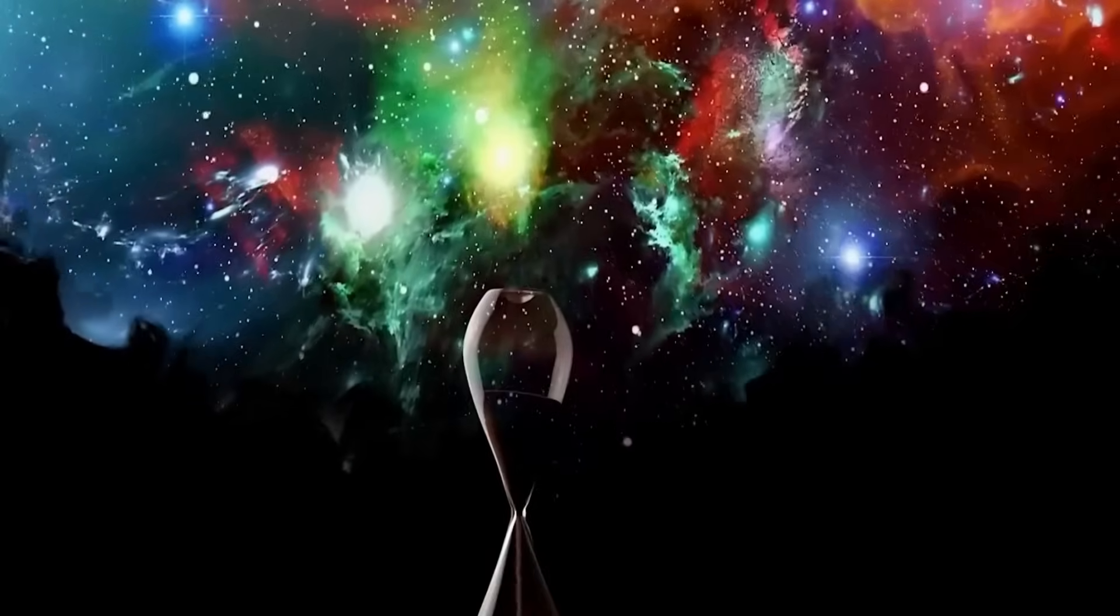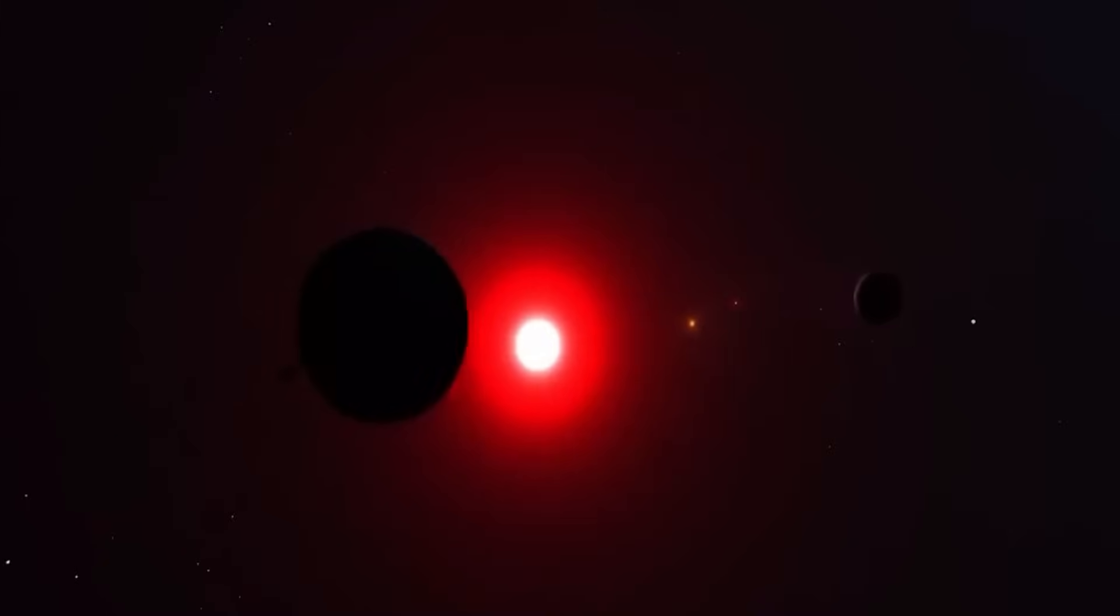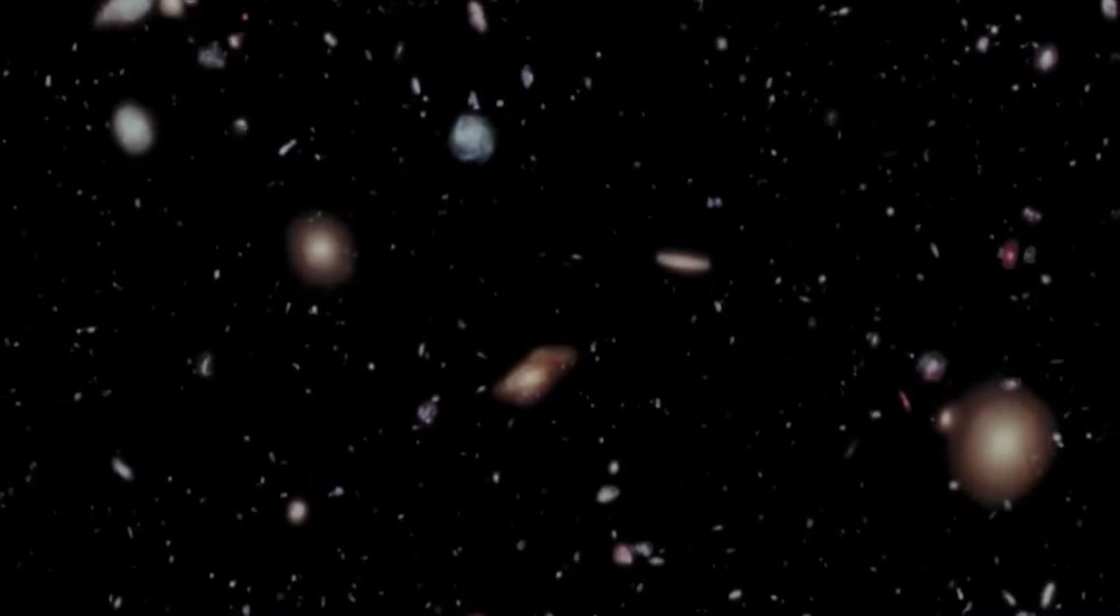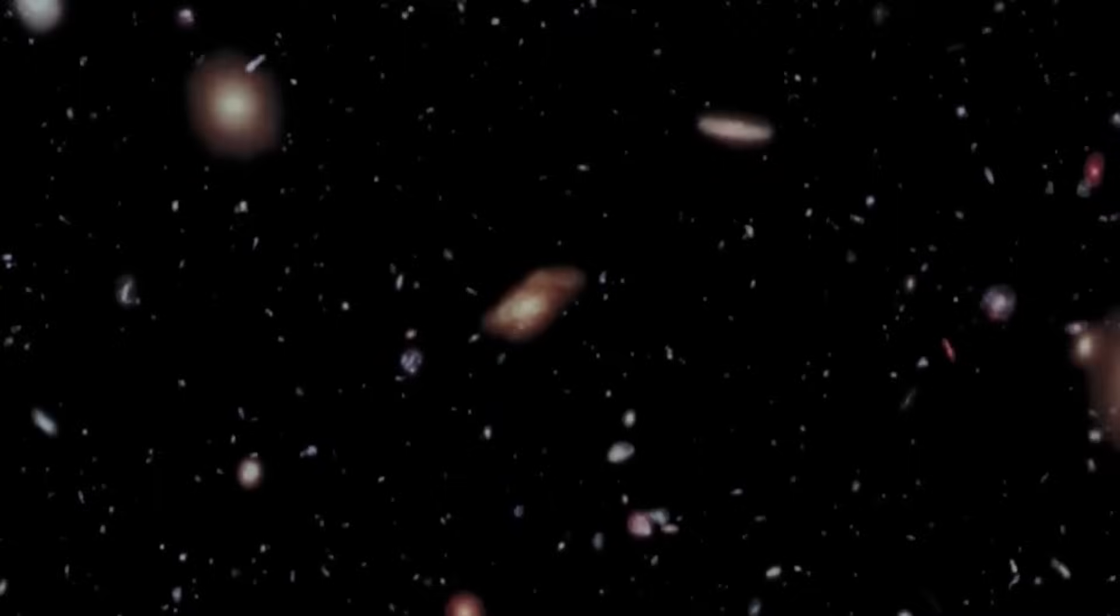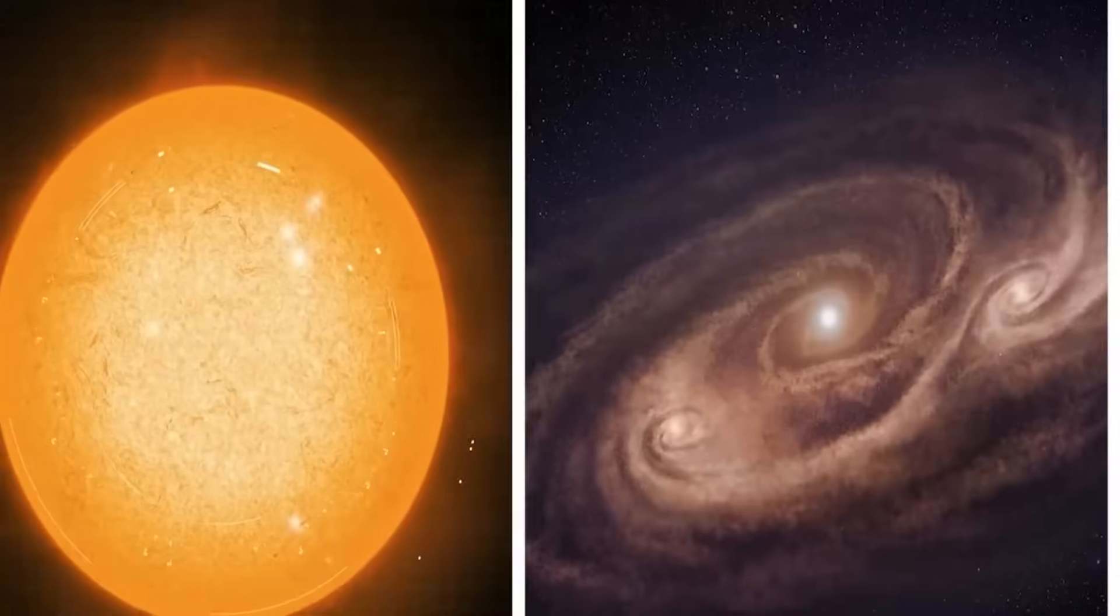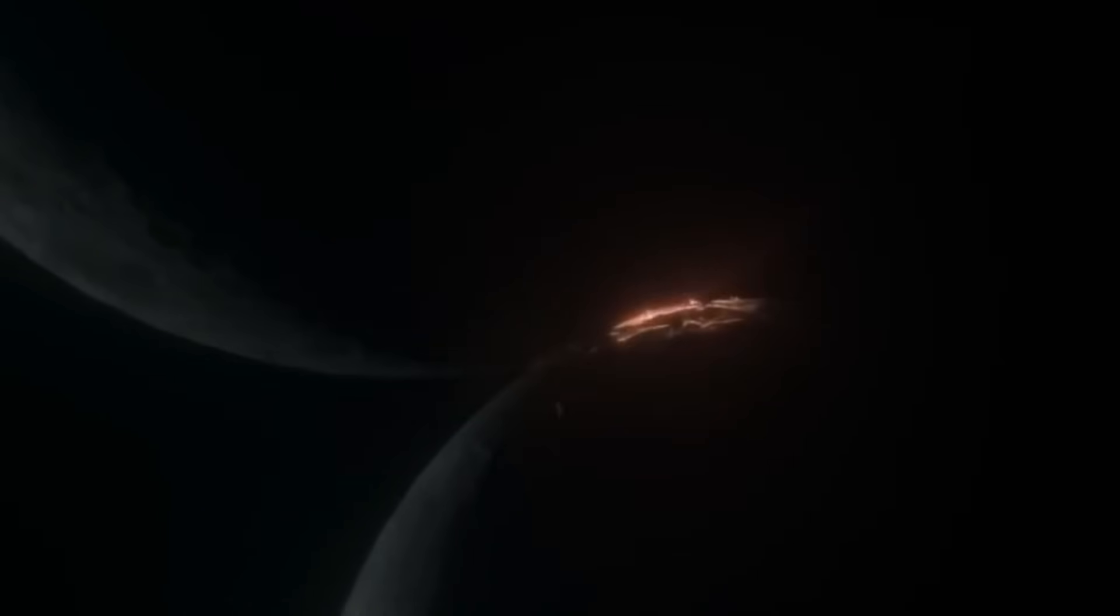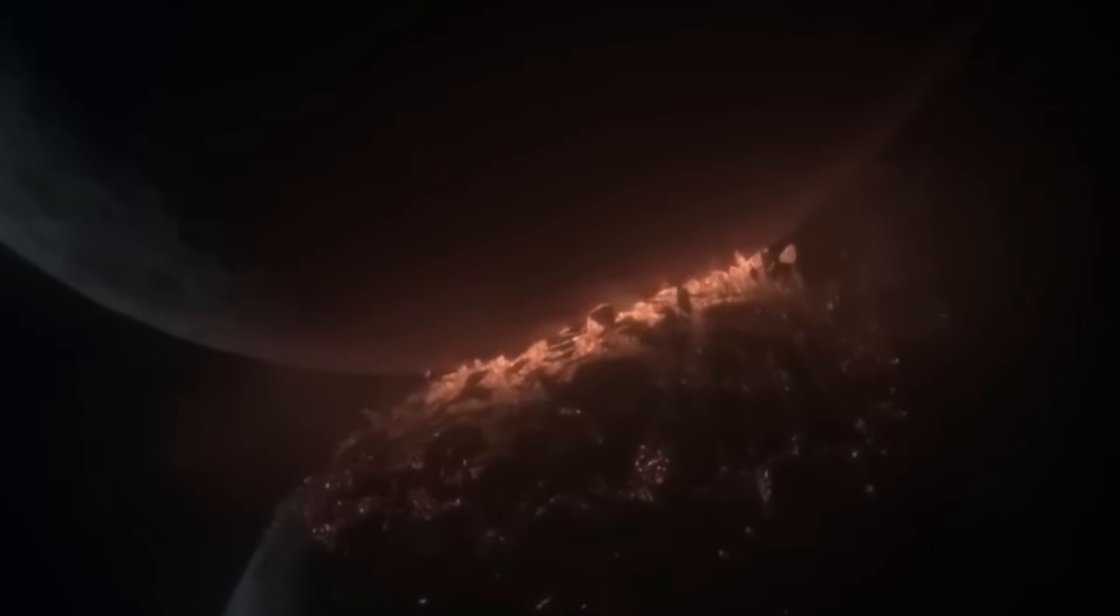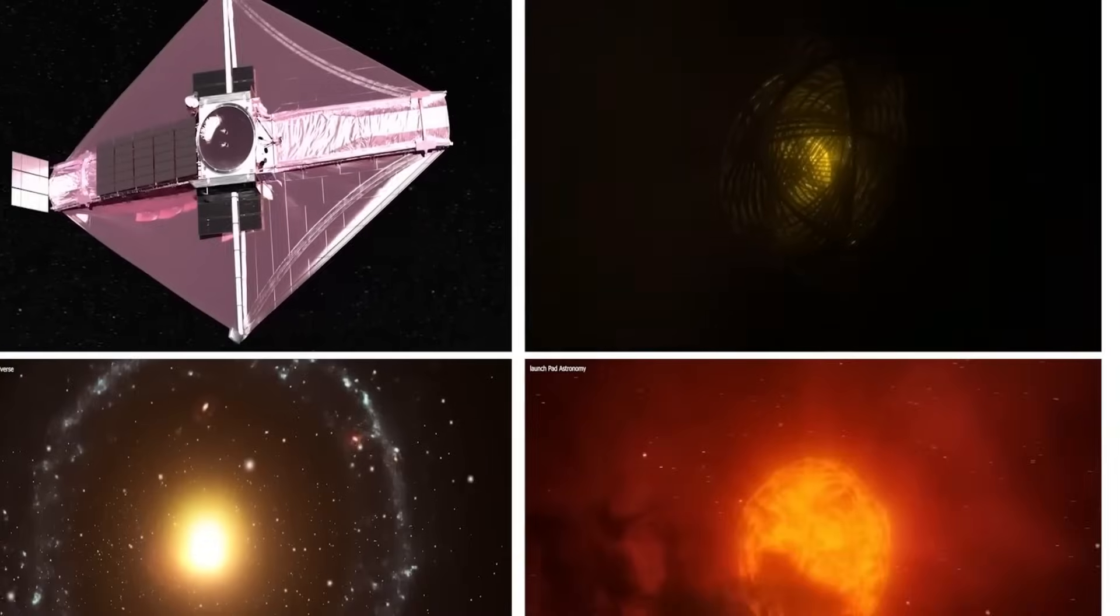They theorized that as the universe ages, the gravitational pull of matter scattered throughout it would eventually decelerate the expansion and start drawing everything closer together. The Big Crunch theory proposed that the universe's ultimate fate would be determined by gravitational forces exerted by every mass in the cosmos. This process would lead to contraction, resulting in the ultimate collapse of the universe on a cosmic scale.